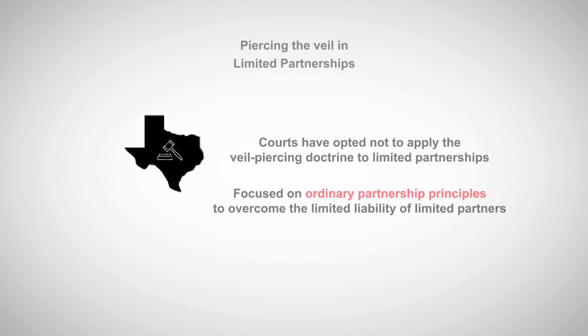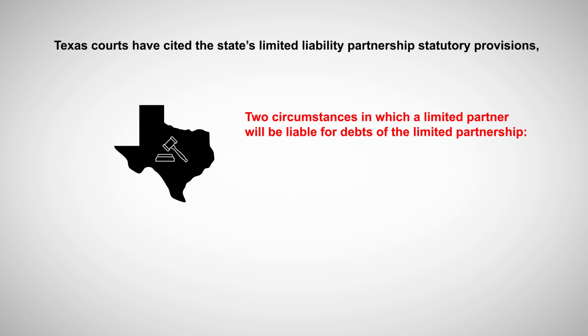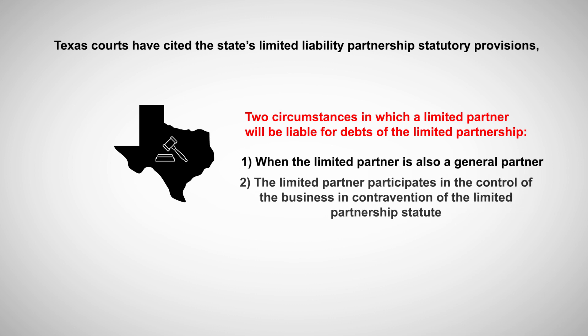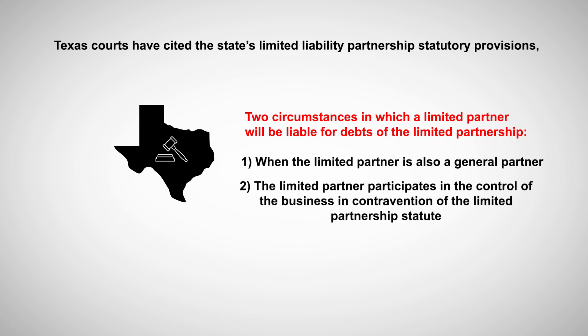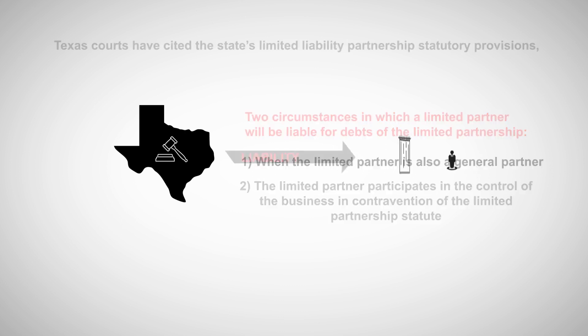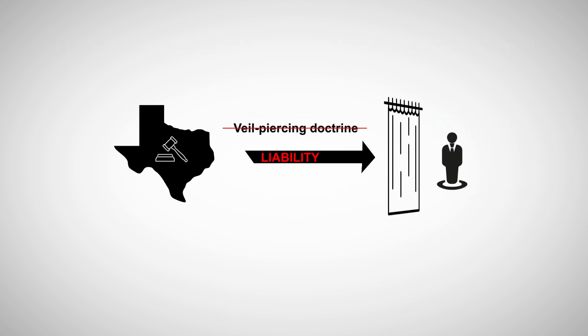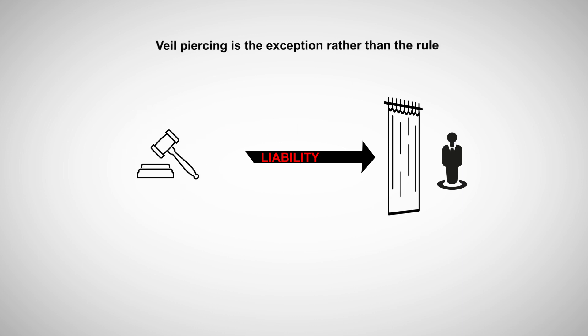For example, Texas courts have cited the state's limited liability partnership statutory provisions, which provide two circumstances in which a limited partner will be liable for debts of the limited partnership. One: when the limited partner is also a general partner. Or two: the limited partner participates in the control of the business in contravention of the limited partnership statute. Absent these scenarios, Texas courts have declined to use veil-piercing doctrines to impose liability on a limited partner.